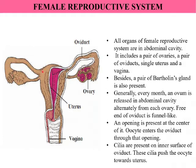The oviducts are initially finger-like or funnel-like structures, and then they continue in the form of ducts, with their openings into the uterus, which is a large muscular bag-like structure. The oviducts hold the ovaries and connect into the uterus. The uterus is very muscular and it accommodates the growing child.